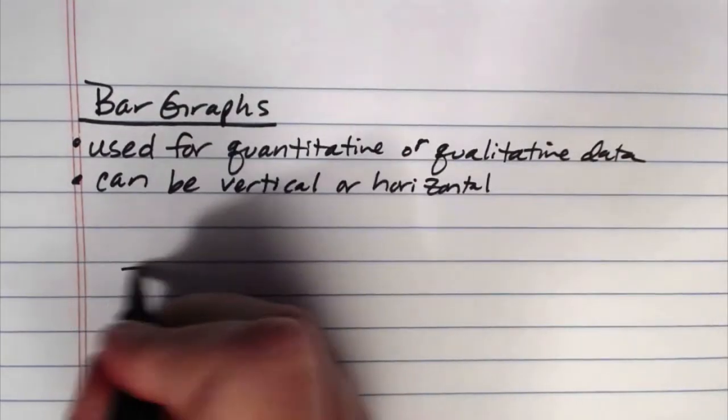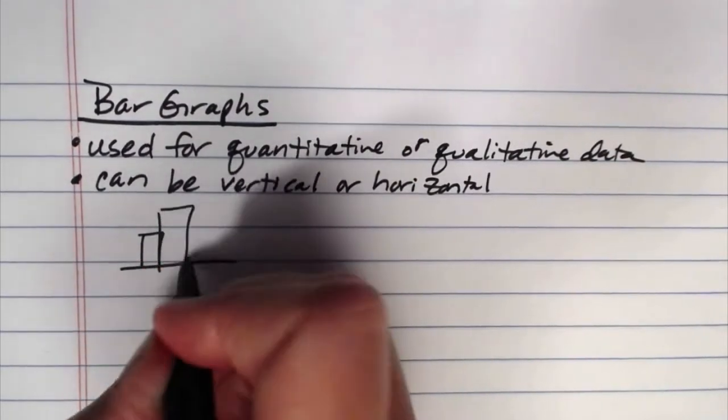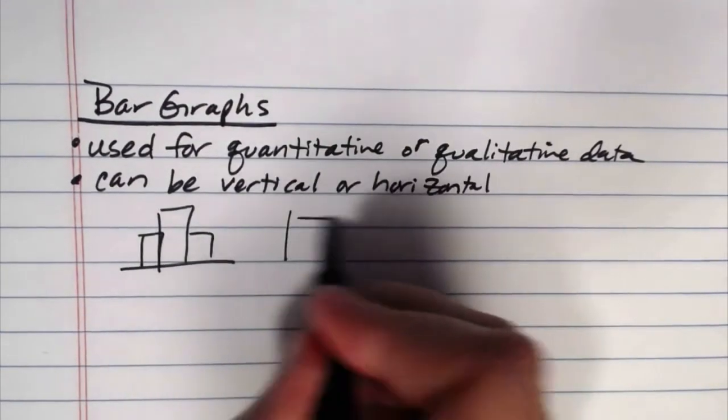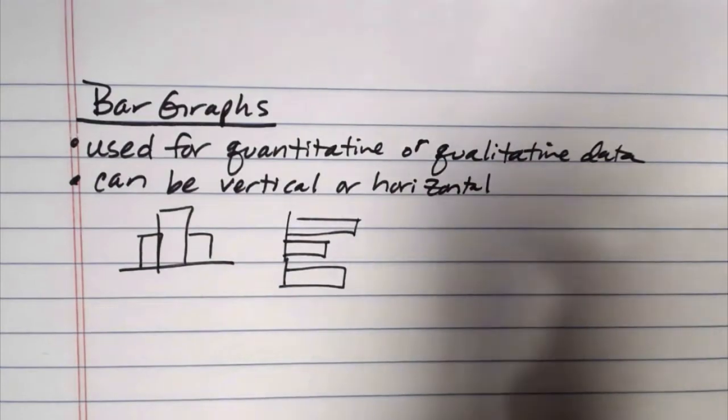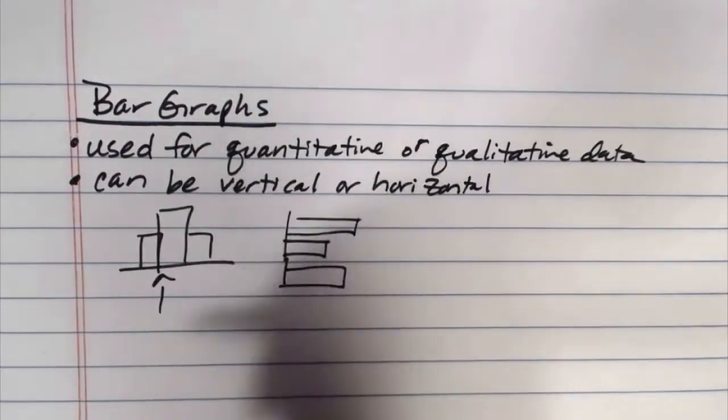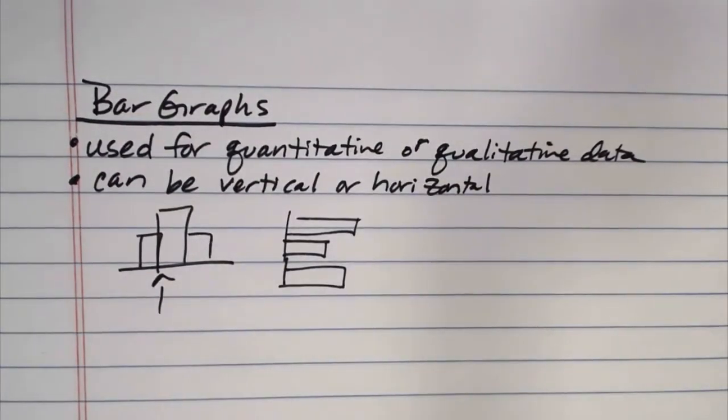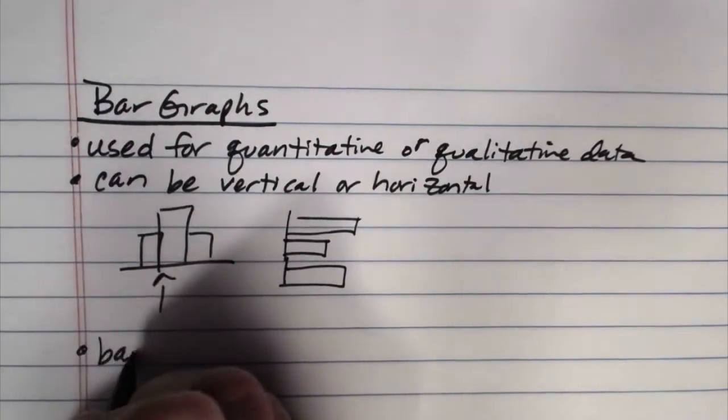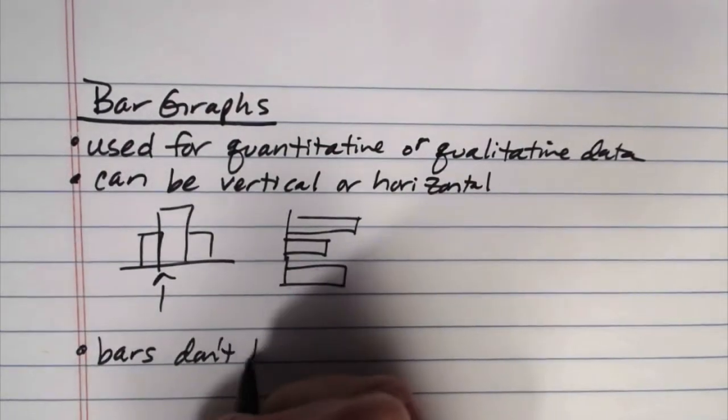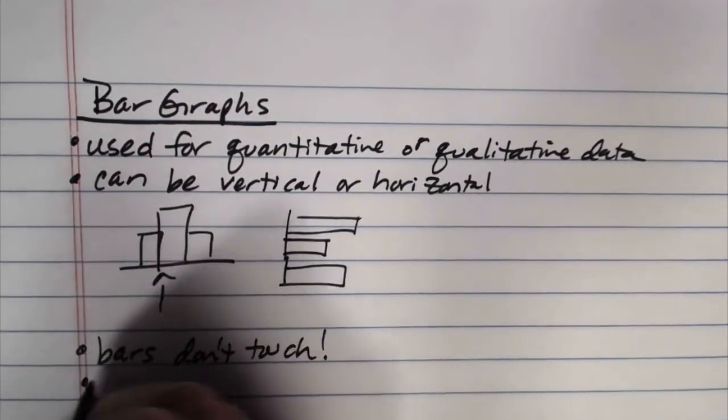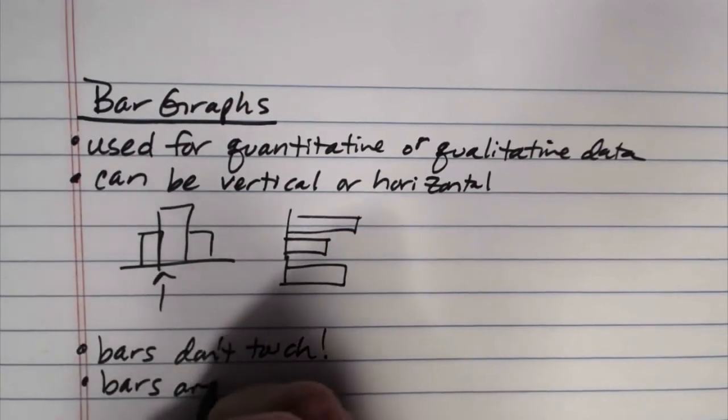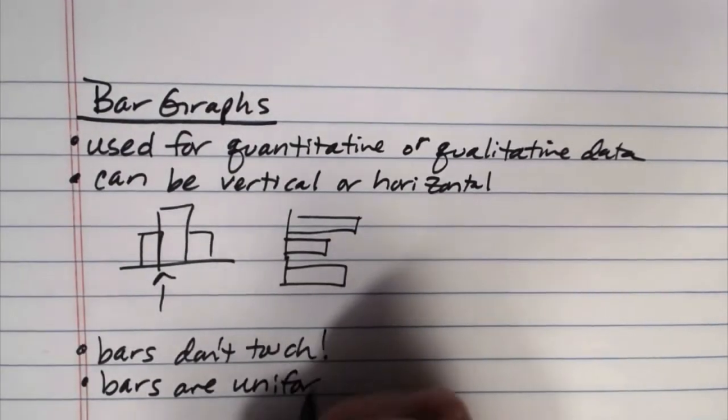They can be vertical or horizontal. So you can have the bars going vertically like this, or you can have your bars going horizontally like this. This one is not a bar graph, because in a bar graph, the bars don't touch. If they touch, then you're looking at a histogram. So the bars don't touch.